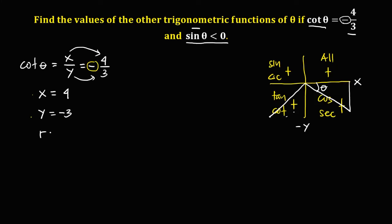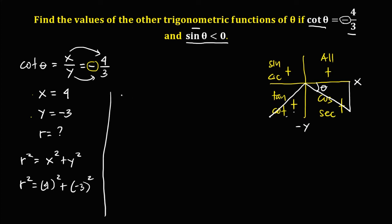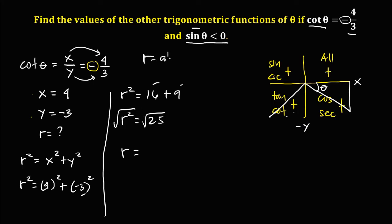To solve for r, we use the formula r squared equals x squared plus y squared. With x equal to 4 and y equal to negative 3: r squared equals 4 squared plus negative 3 squared, which is 16 plus 9 equals 25. Taking the square root, since r is the hypotenuse and always positive, r equals 5.